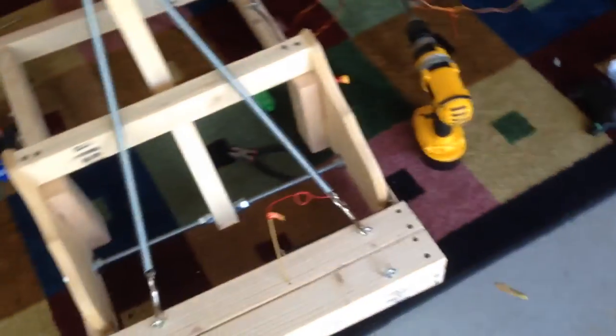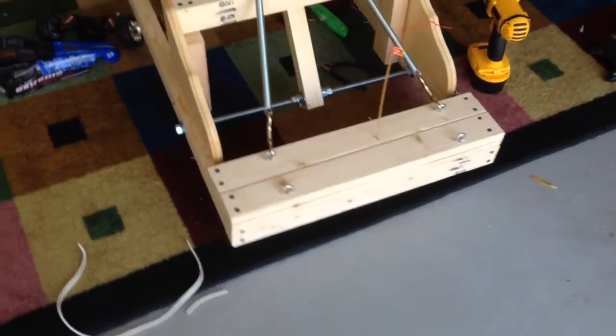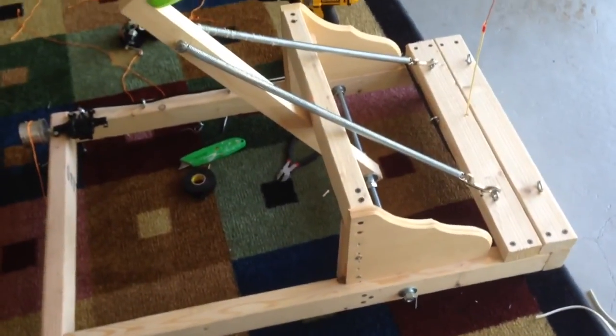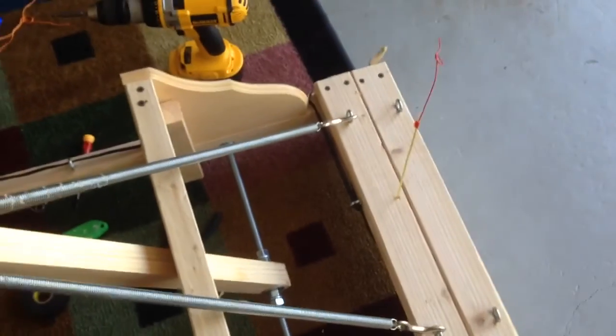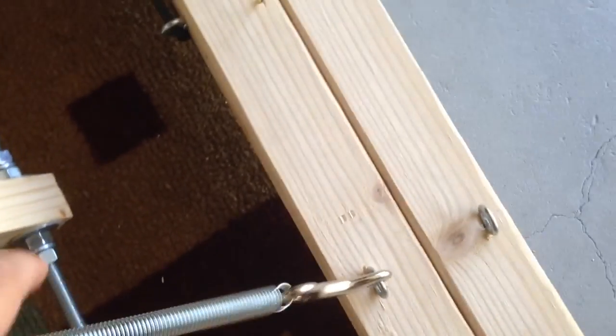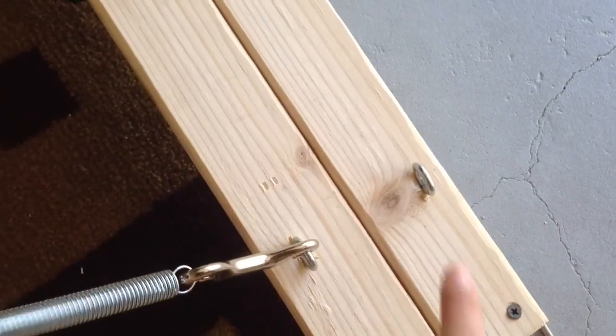Our catapult. It's made of mostly wood. I think the rules are it has to be made out of wood, the frame and the arm. So you see the frame here has the springs connected to it. We put two eyelets to...